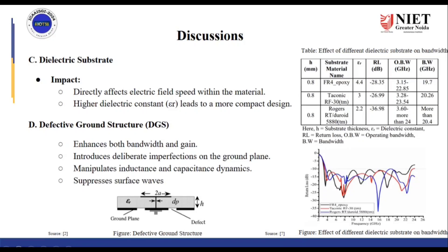The next technique involves using different dielectric substrates. Using a different dielectric substrate directly affects the electric field. A higher dielectric constant leads to a more compact design. Looking at the table, at the same substrate thickness, when we use different substrate materials, the material with the lowest dielectric constant gives the wider bandwidth. So, using a lower dielectric constant substrate gives us wider bandwidth.